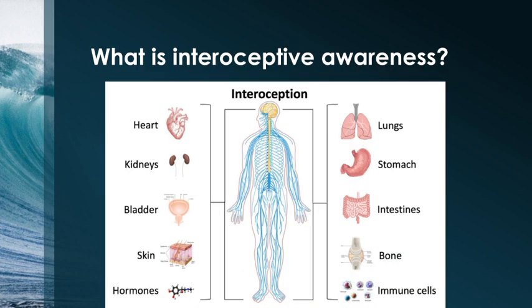Interoceptive awareness, sometimes known as the eighth sense, is the conscious perception of our internal bodily states — for example, our heartbeat, whether our bladder is full or not, how our skin feels, and how our hormones are feeling.